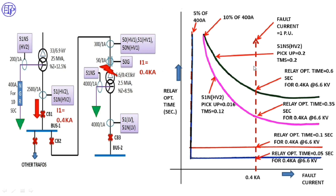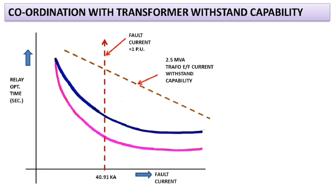For a fault on the 6.6 kV side with 400 A fault current: the two instantaneous relays 50G and 50N are both set at 5% of 400 A pickup, so their pickup lines are the same. 50G operates at 0.05 s and 50N at 0.1 s. Since the pickups of 51NHV2 and 51NS are also equal based on the same fault current, their curves start at the same point. 51NHV2 operates at 0.35 s and 51NS at 0.6 s. The coordination sequence for a fault on the HV side is: first 50G, then 50N, then 51NHV2, and finally 51NS.